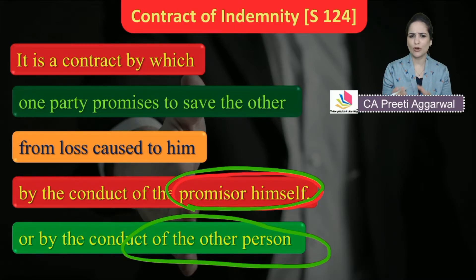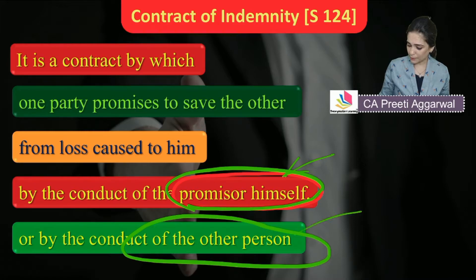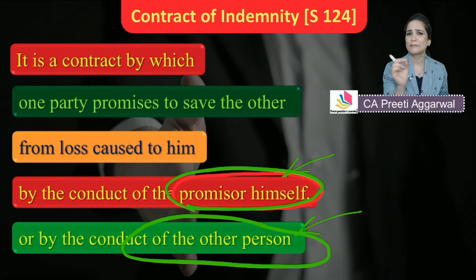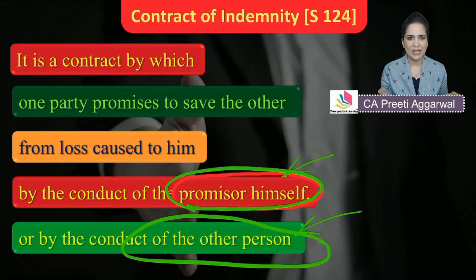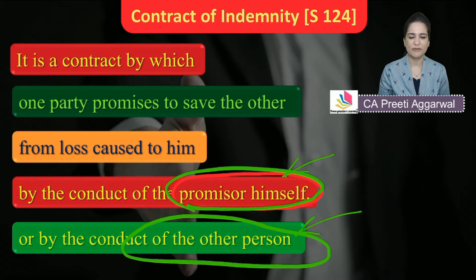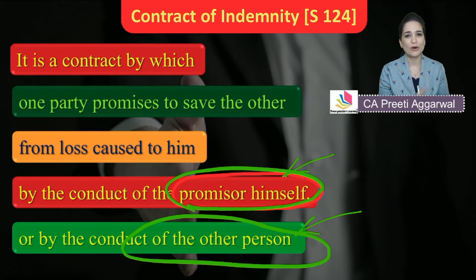The definition under Section 124 covers only those contracts where the loss is caused either by the conduct of the promisor himself or by the conduct of any other person. So only loss caused by persons is covered. However, insurance loss may be due to any natural cause like floods, earthquake, or accident — not necessarily because of some person. So the scope of the definition of contract of indemnity under Section 124 is very narrow.